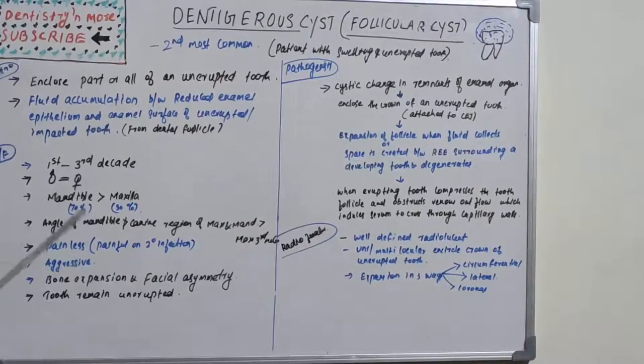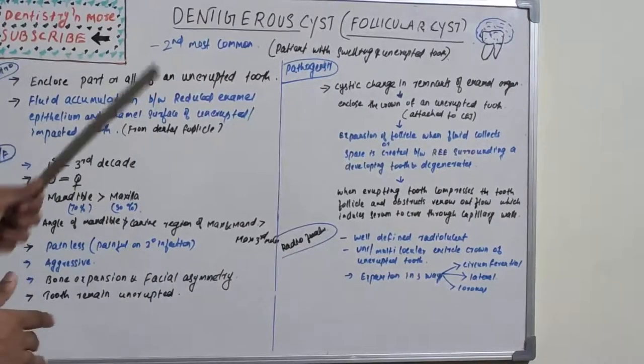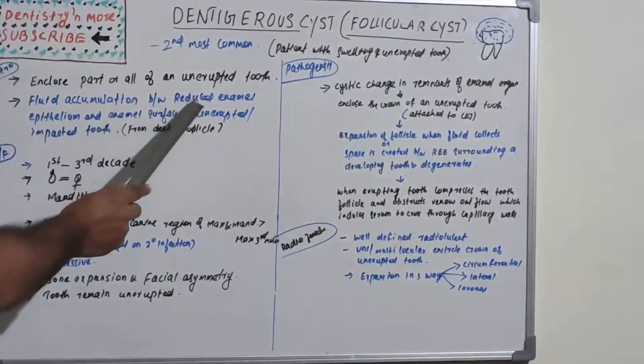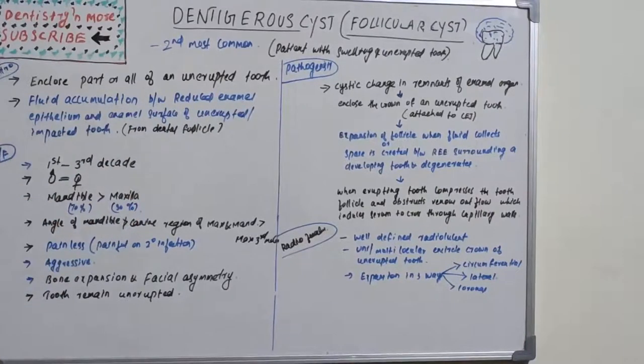Dentigerous cyst - the name itself gives an idea about its origin. Dentigerous means germinal, so dental tooth-forming cells associated with a cyst is known as dentigerous cyst. It's exactly the enamel epithelium, specifically the reduced enamel epithelium, which is the outermost covering when the tooth erupts.